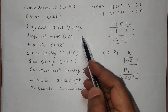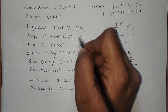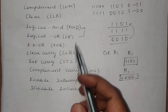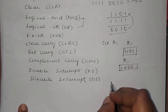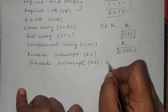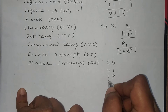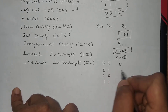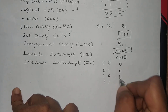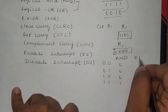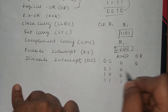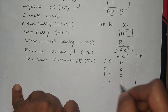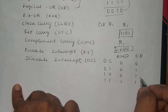The next two instructions are logical AND and logical OR. Both instructions are very important for performing data manipulations. For logical AND, the results for all combinations are: 0 AND 0 = 0, 0 AND 1 = 0, 1 AND 0 = 0, 1 AND 1 = 1. For logical OR: 0 OR 0 = 0, 0 OR 1 = 1, 1 OR 0 = 1, 1 OR 1 = 1.